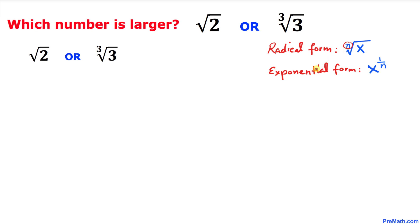is n and we convert them into exponential form, then this simply becomes the reciprocal of that index. So let's revert back to our original problem. We have square root of 2, so the index is missing. By